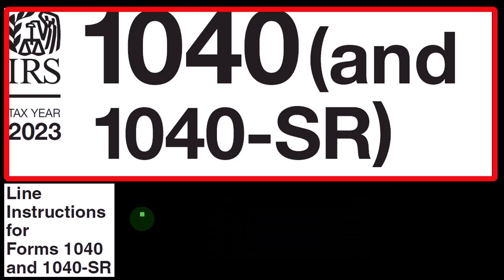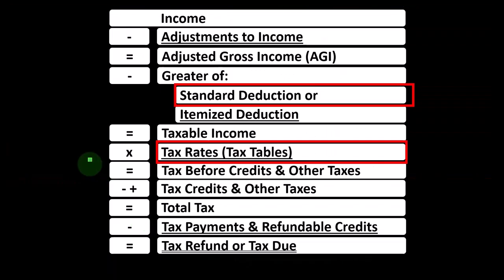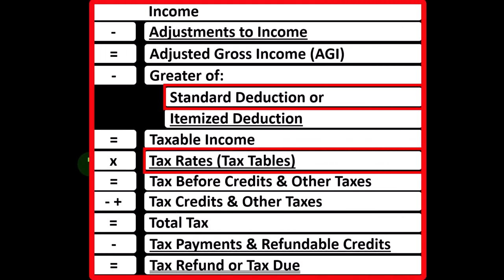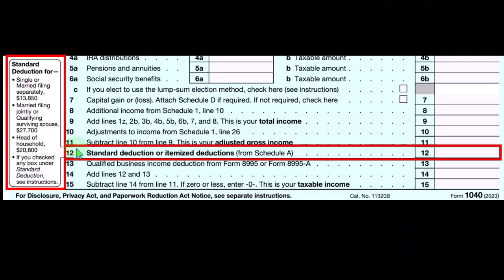We've been thinking about filing statuses such as single versus married versus head of household and so on. As we think about filing statuses, we want to consider and visualize what effect those will have on the tax return. The major line items impacted by changes to filing status are the standard deduction and the tax rates, though other changes could of course reverberate throughout the tax return.